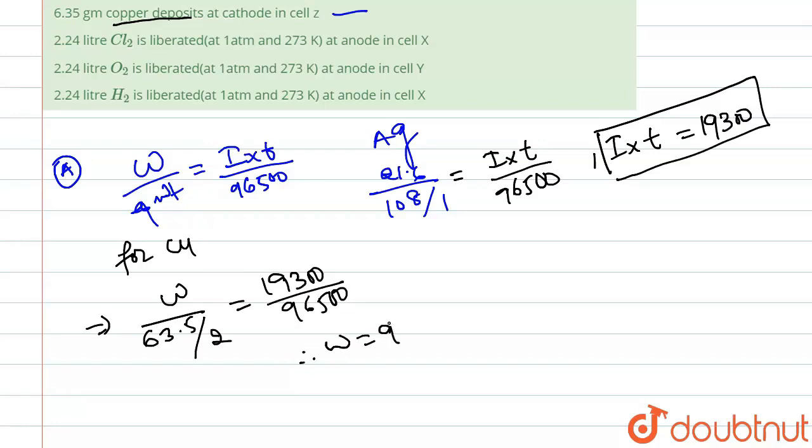From here what we get is w equals to 6.35 gram. So our statement one is correct.